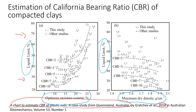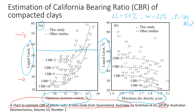Let's see how we use this chart. For example, we have a liquid limit of about 55% and a water content of about 22%, and a maximum density of about 1.85 grams per cubic centimeter. Looking at the left-hand chart, liquid limit is about 55 and water content is about 22%.